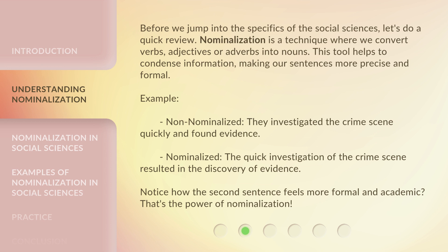Before we jump into the specifics of the social sciences, let's do a quick review. Nominalization is a technique where we convert verbs, adjectives, or adverbs into nouns. This tool helps to condense information, making our sentences more precise and formal. For example, non-nominalized: 'They investigated the crime scene quickly and found evidence.' Nominalized: 'The quick investigation of the crime scene resulted in the discovery of evidence.' Notice how the second sentence feels more formal and academic? That's the power of nominalization.